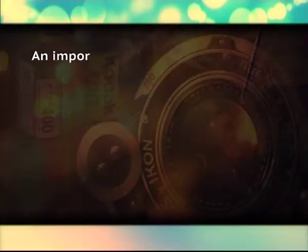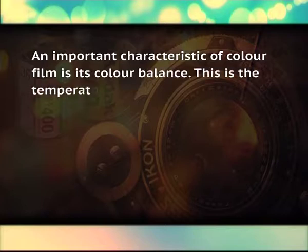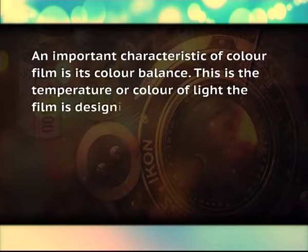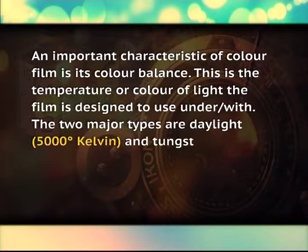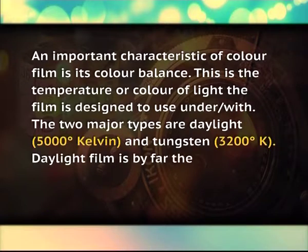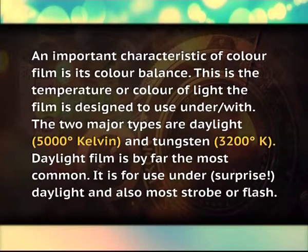Types — Colour: Colour film is both sensitive to and records both value (dark and light) and hue (colours). Colour film comes in both negative, to make prints, and positive, to make transparencies or slides. An important characteristic of colour film is its colour balance — the temperature or colour of light the film is designed to use. The two major types are daylight (5000 degrees Kelvin) and tungsten (3200 degrees Kelvin). Daylight film is by far the most common; it is for use under daylight and with strobe or flash.